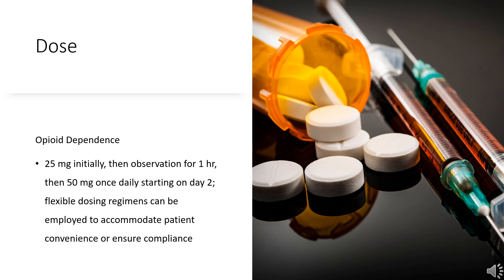No symptom withdrawal after naloxone administration. P.O.: 25 mg initially, then observation for 1 hour, then 50 mg once daily starting on day 2. Flexible dosing regimens can be employed to accommodate patient convenience or ensure compliance. I.M.: 380 mg in gluteal muscle every 4 weeks for maintenance of abstinence.